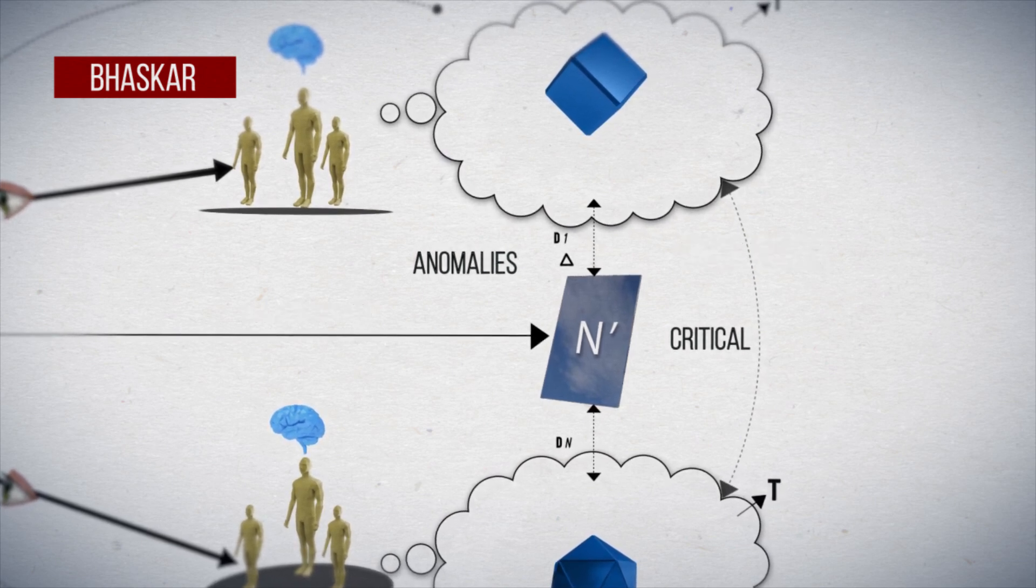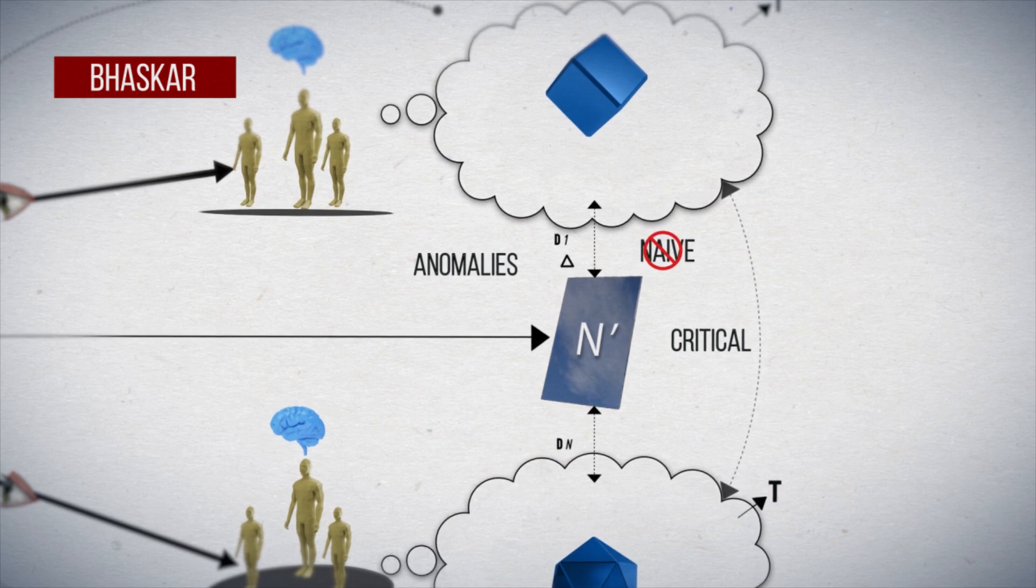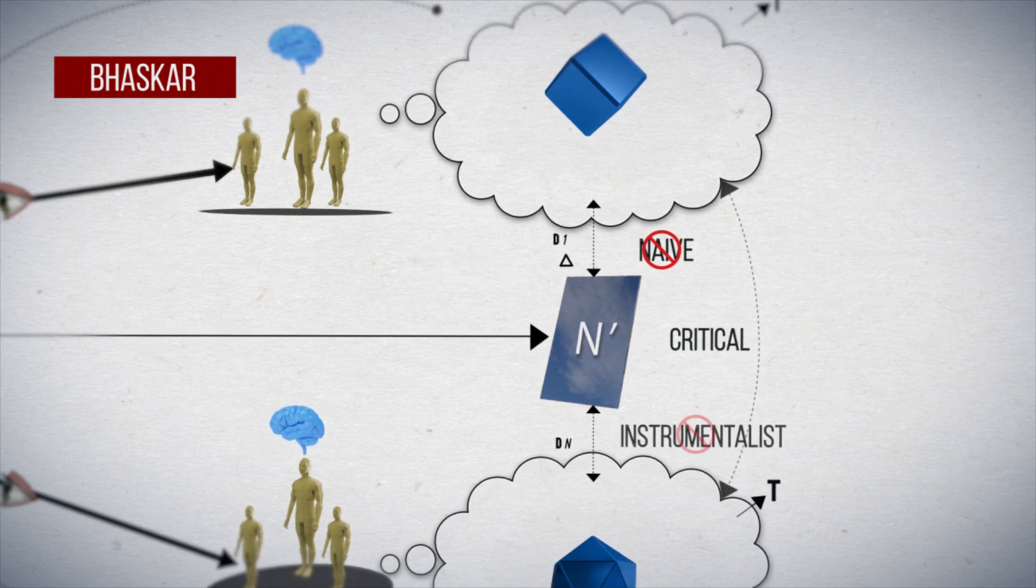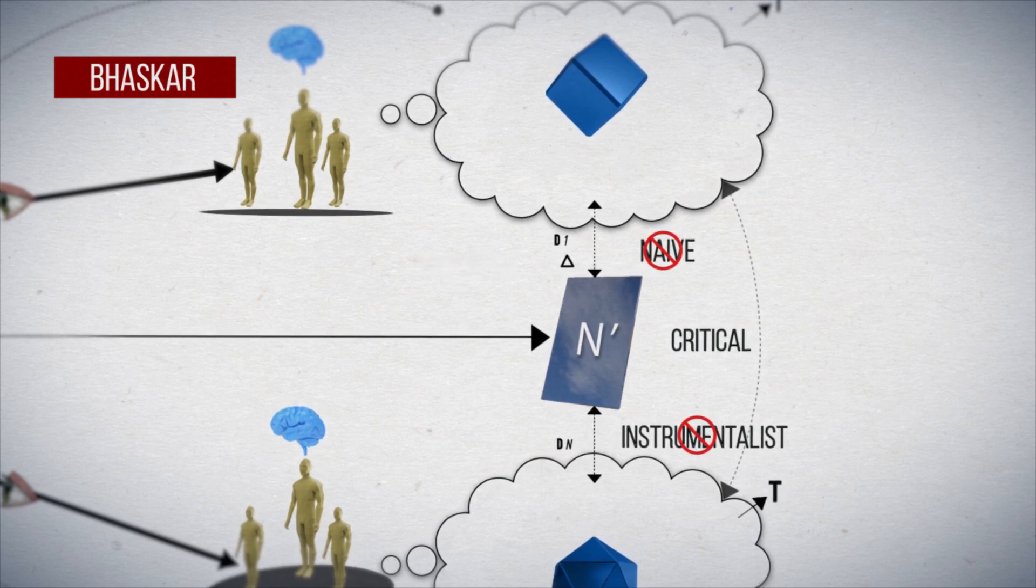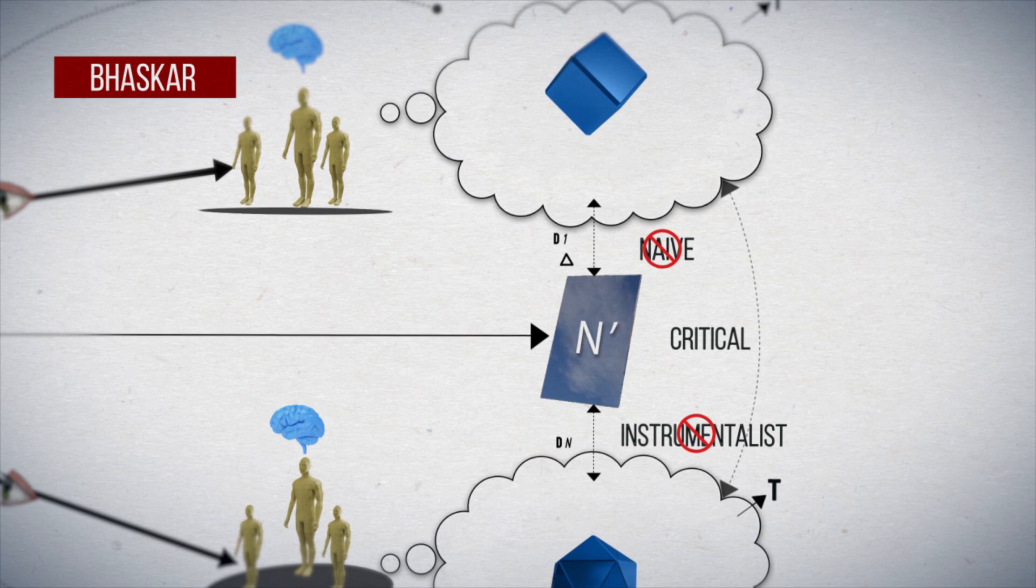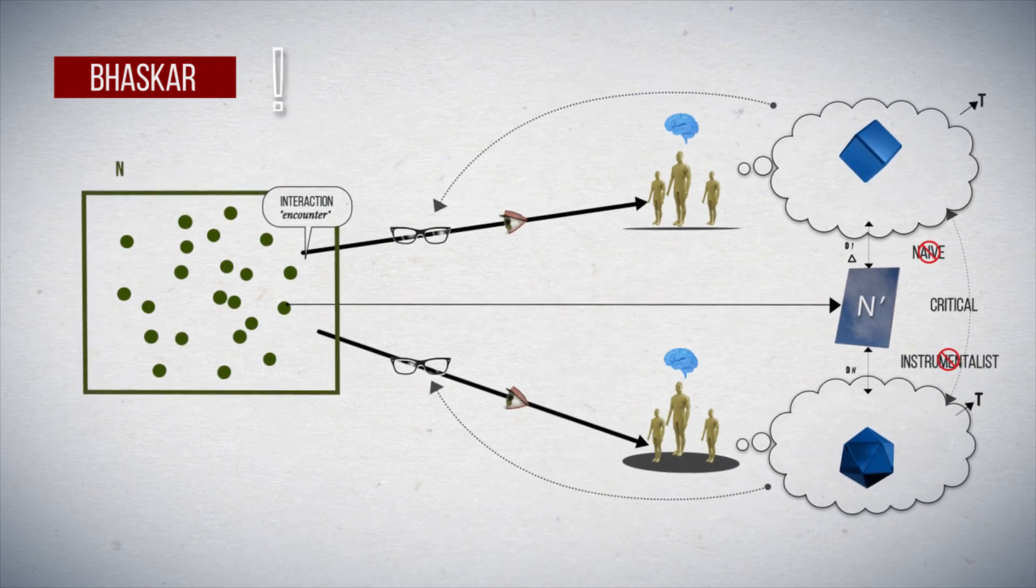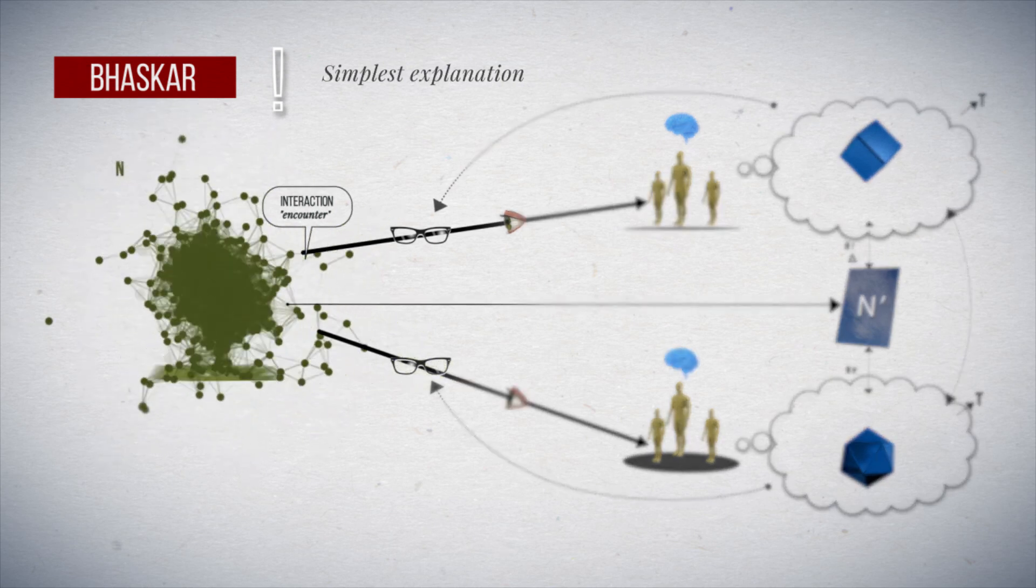Thus, Baskar's critical realism is not naive, as if there were no gap between the construct and external reality, nor instrumentalist, as if this gap was not important in practice. For McGrath, this seems to be the simplest explanation for the success of the natural sciences.